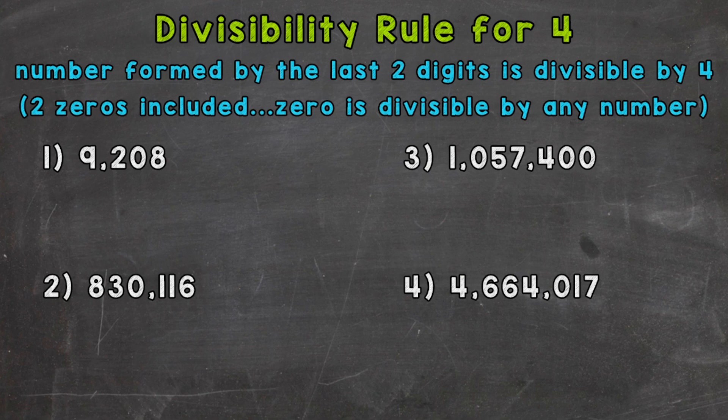Two zeros, this is included because 0 is divisible by any number, so remember that. 0 is divisible by any number.